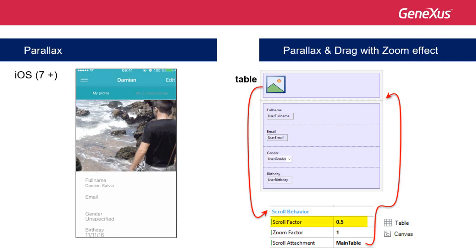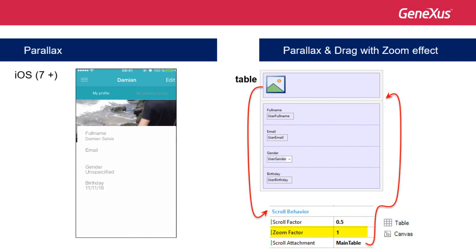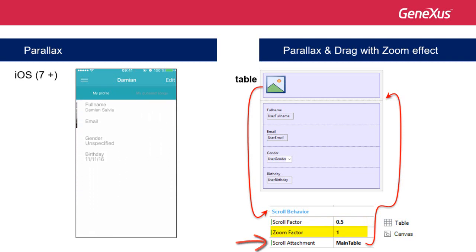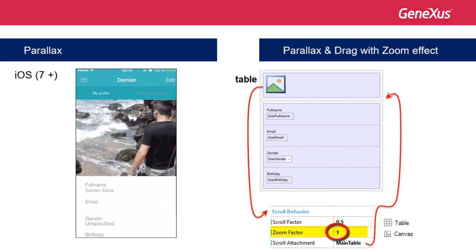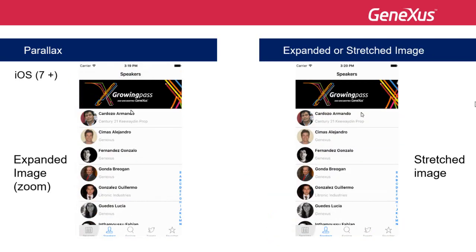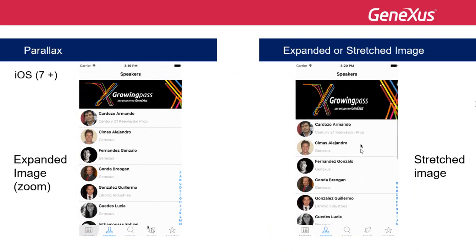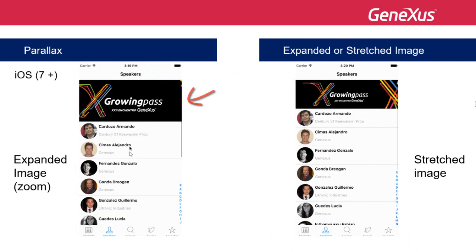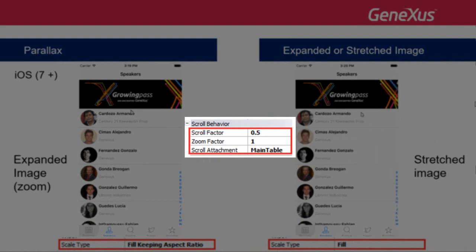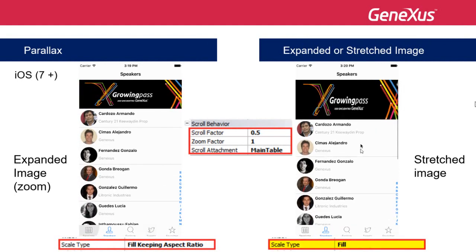We've already seen the scroll factor property. The zoom factor is a decimal value — 0 by default, meaning no zoom — to indicate how much zoom in or out to apply to the control when the user scrolls on the controls of the scroll attachment property. Positive or negative values will determine a zoom in or a zoom out. This effect is supported only in iOS 7 or higher. One specific case occurs when we do a drag or pull down with a table or canvas containing an image and we only want it to extend in length instead of expanding in all directions with a zoom. This is possible by using the same scroll factor and zoom factor values, but changing the value of the scale type property to the fill value.